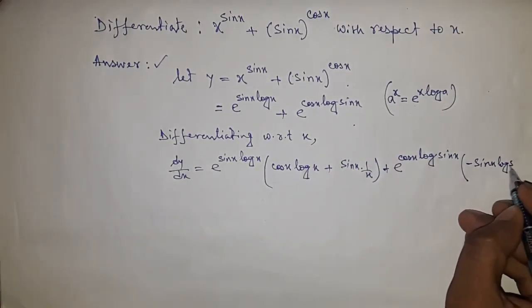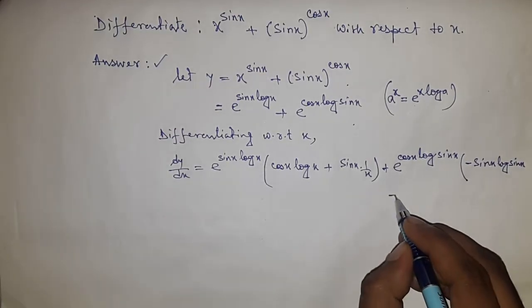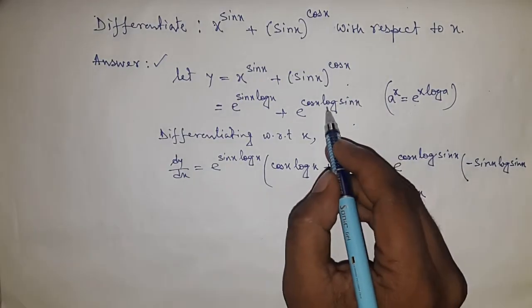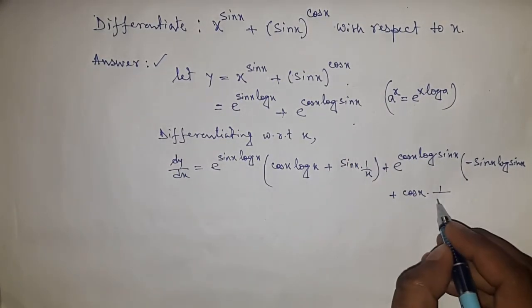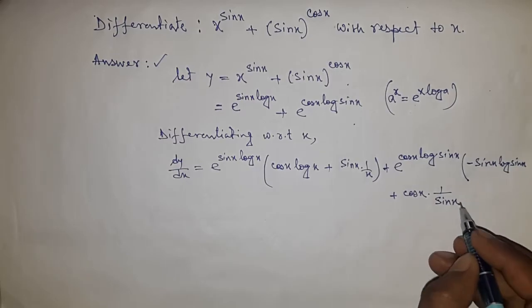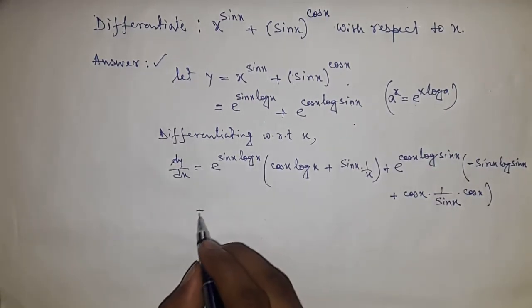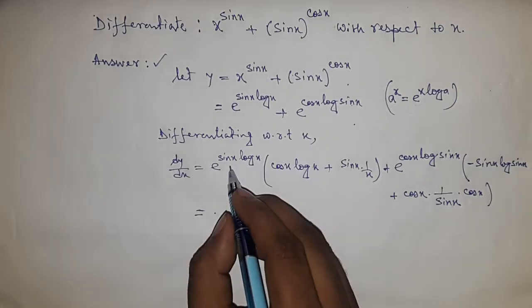And derivative of log sine x equals 1 by sine x. So here we use 1 by sine x, and derivative of sine x equals cos x. Now simplifying this, this equals...